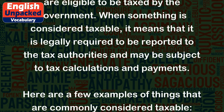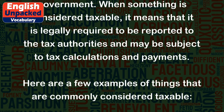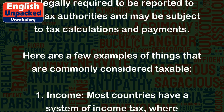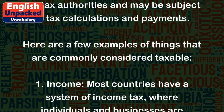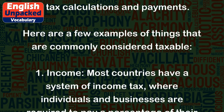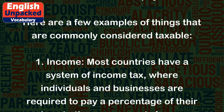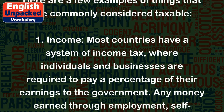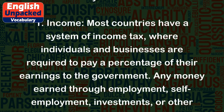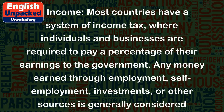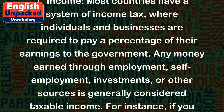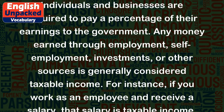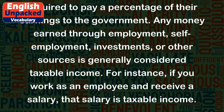Here are a few examples of things that are commonly considered taxable. 1. Income. Most countries have a system of income tax, where individuals and businesses are required to pay a percentage of their earnings to the government. Any money earned through employment, self-employment, investments, or other sources is generally considered taxable income. For instance, if you work as an employee and receive a salary, that salary is taxable income.